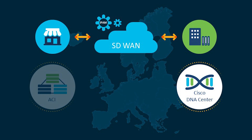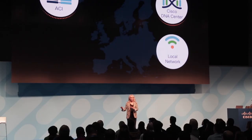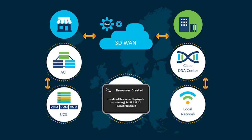DNA Center will also help manage and deploy the local network. We'll be using UCS for the applications running in the data center and the store. At the end, what we want is a connected store up and running with all of the applications and servers it needs.